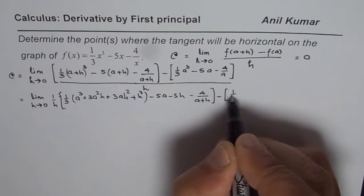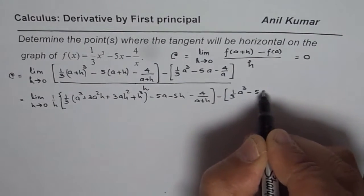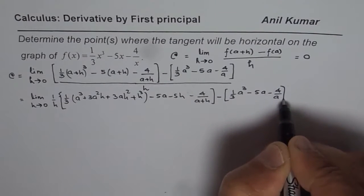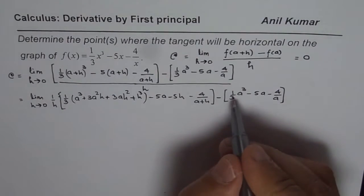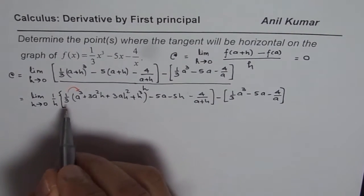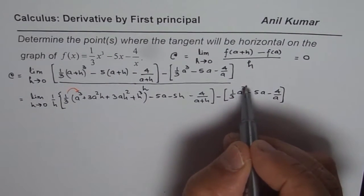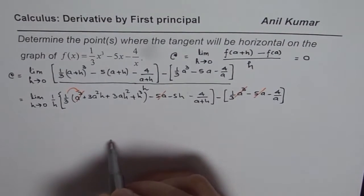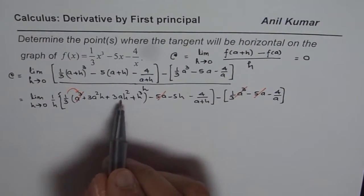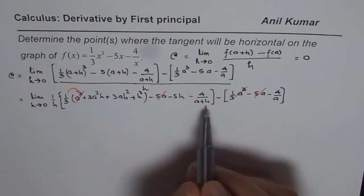Now, if you notice, some of the terms will cancel. When you open the bracket: (1/3)a³ cancels with -(1/3)a³, and -5a cancels with +5a. So we are left with all the terms that have h in them. We now need to simplify the remaining terms.